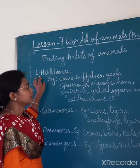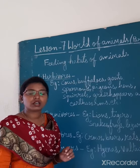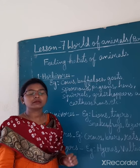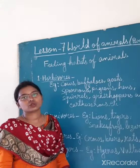First we will see herbivores. What are herbivores animals? Herbivores animals are those animals who eat plants and grass. Here are some examples for herbivores animals. First we will see cows, buffaloes, goats, etc. They eat plants and grass.